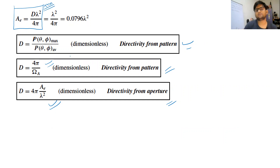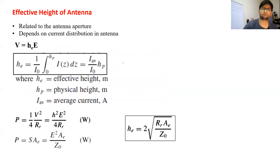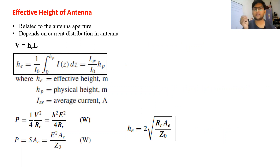This is a very important formula for calculating effective area. For an isotropic radiator, D becomes 1, and you get the effective area as 0.0796 lambda squared. Now, coming to the height of an antenna — the effective height is highly related to the antenna aperture.